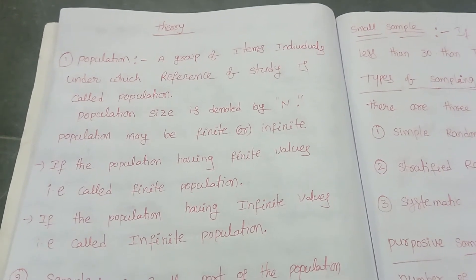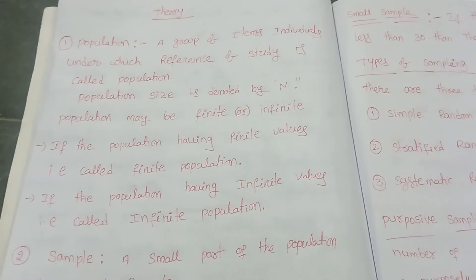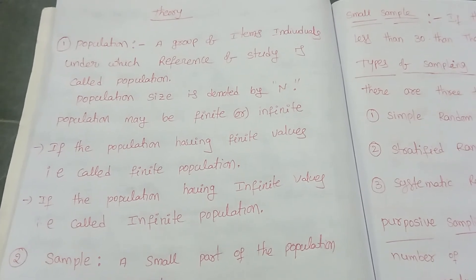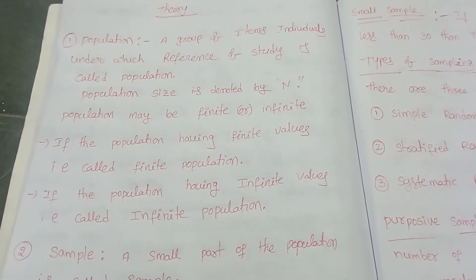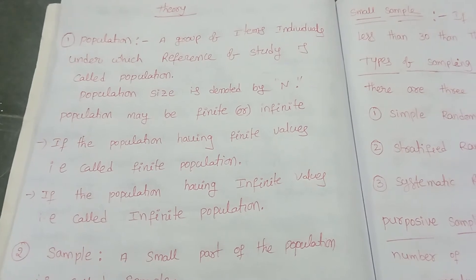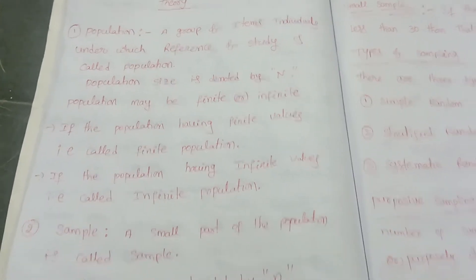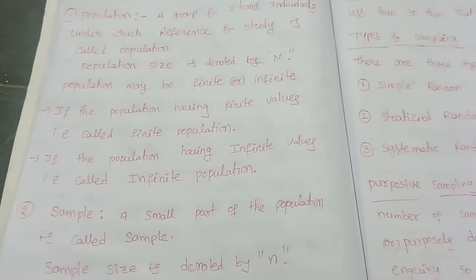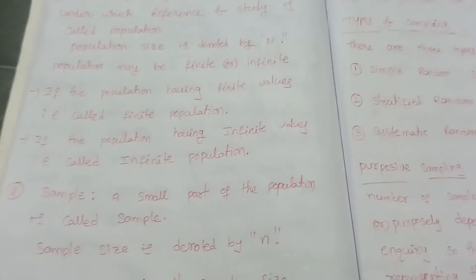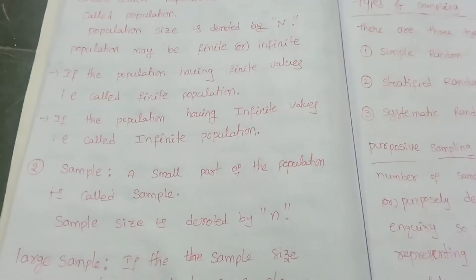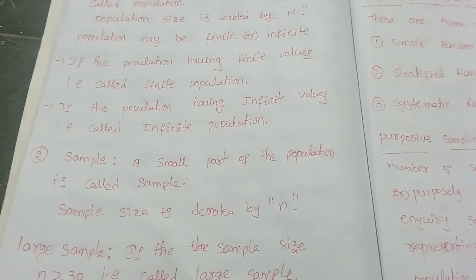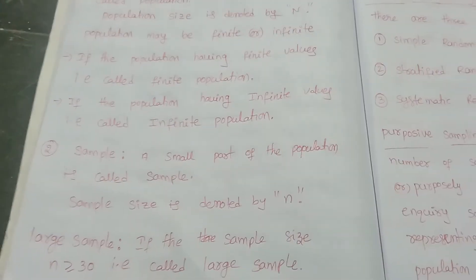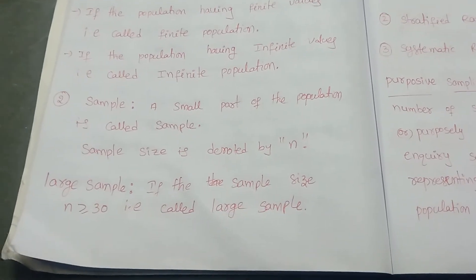The population may be finite or infinite. Finite population means if the population has finite values, that is called finite population. If the population has infinite values, that is called infinite population.